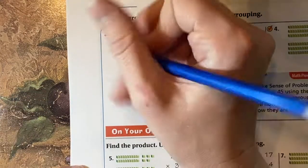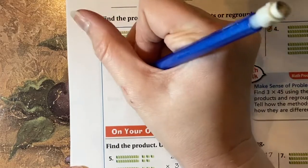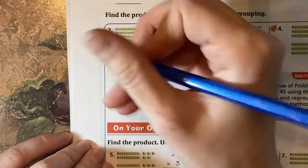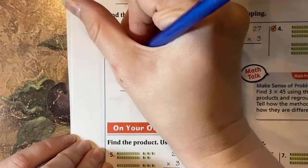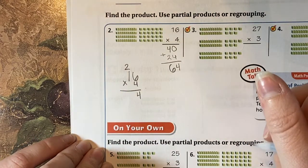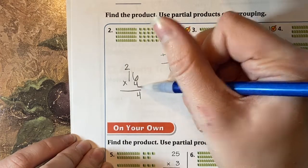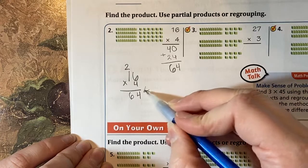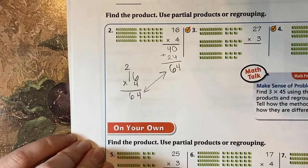Or I could do it the other way where I have 16 times four. I start with the ones place. Six times four, I remember is 24, and I regroup. Then one times four is four plus two, six. So my answer is still the same. It was just a different way of doing it.